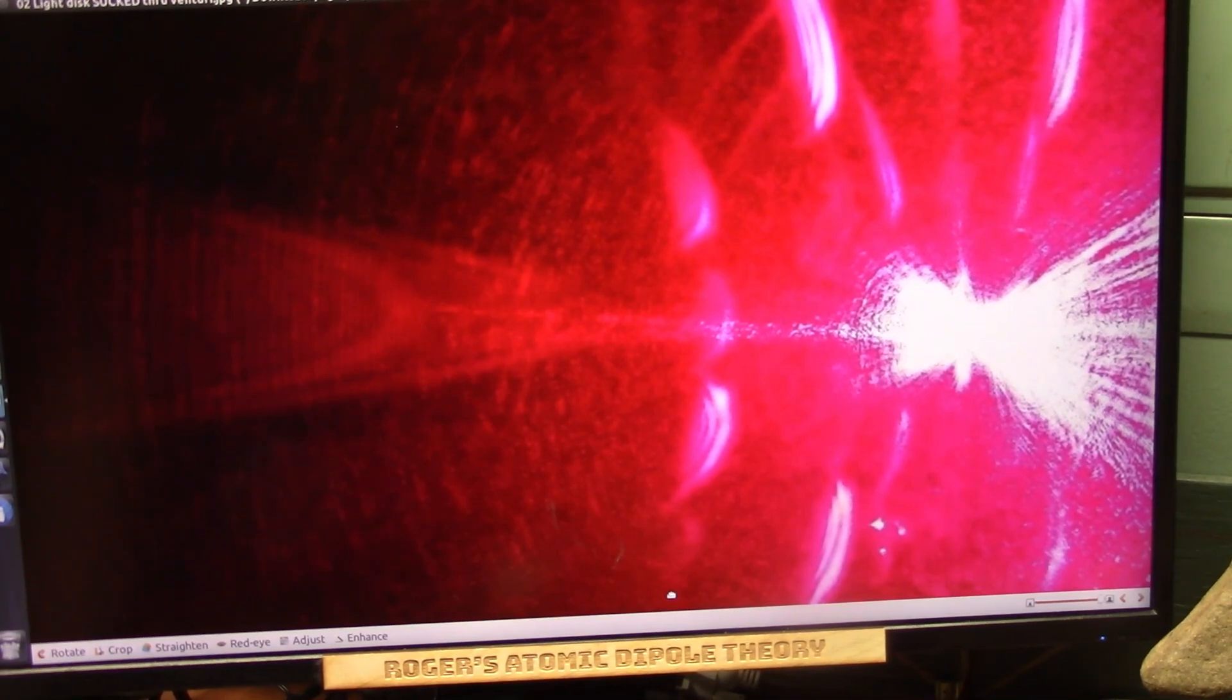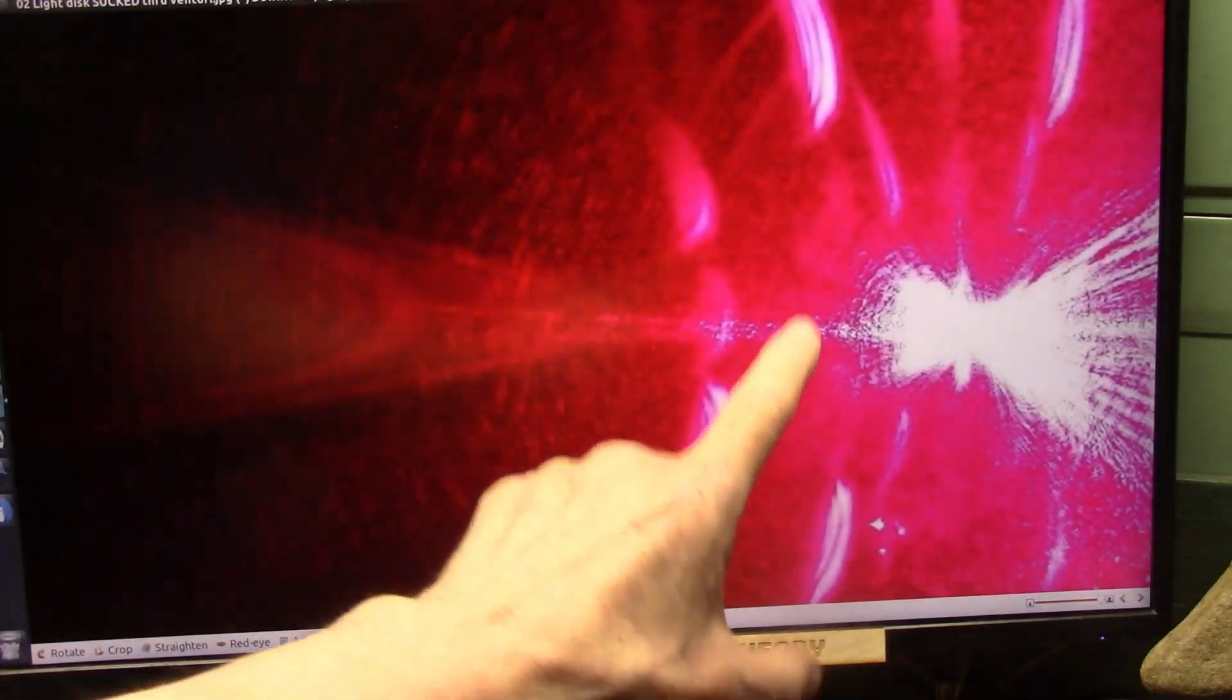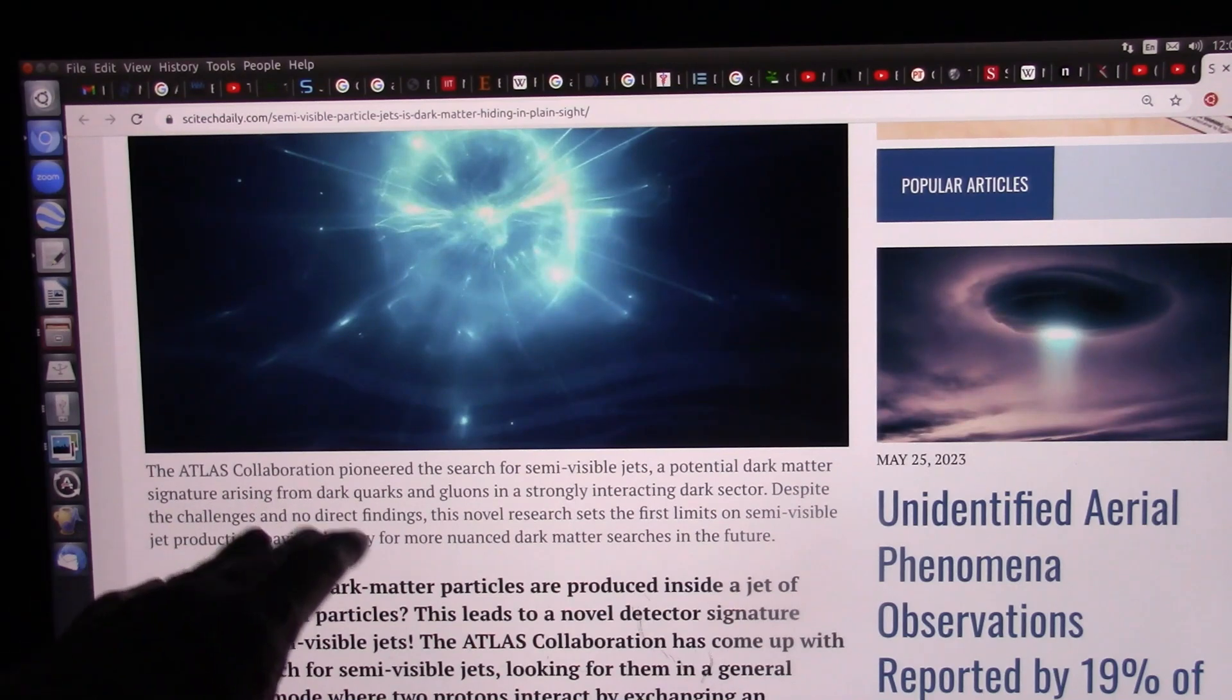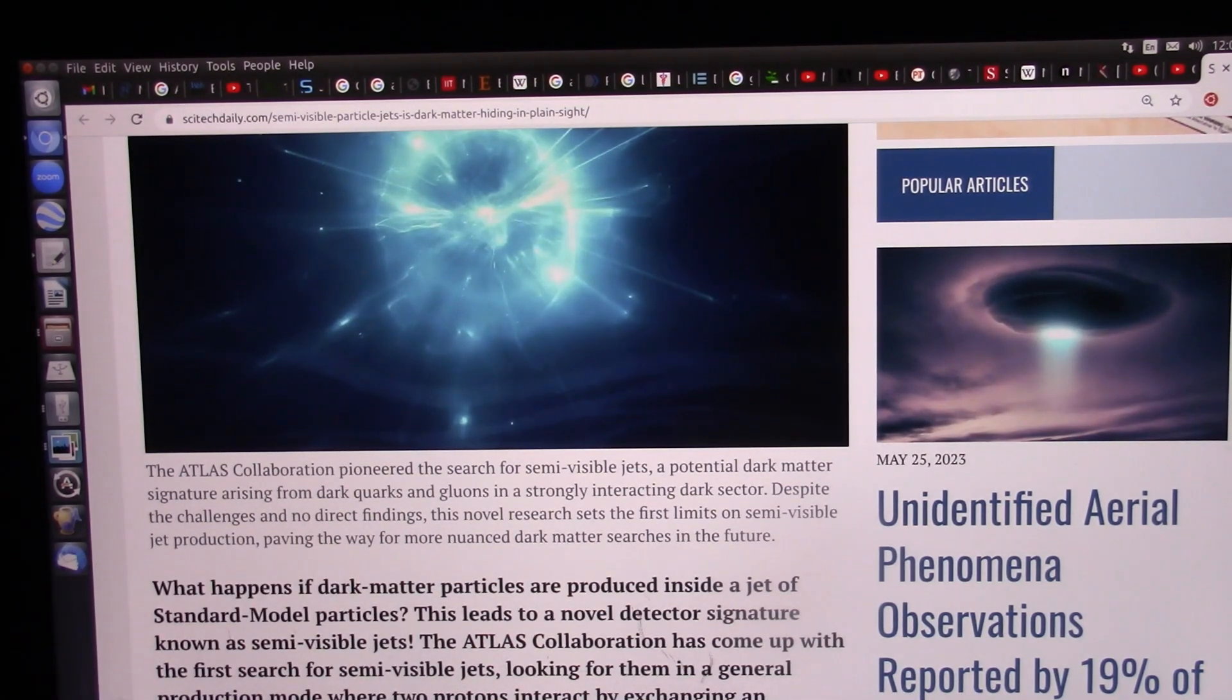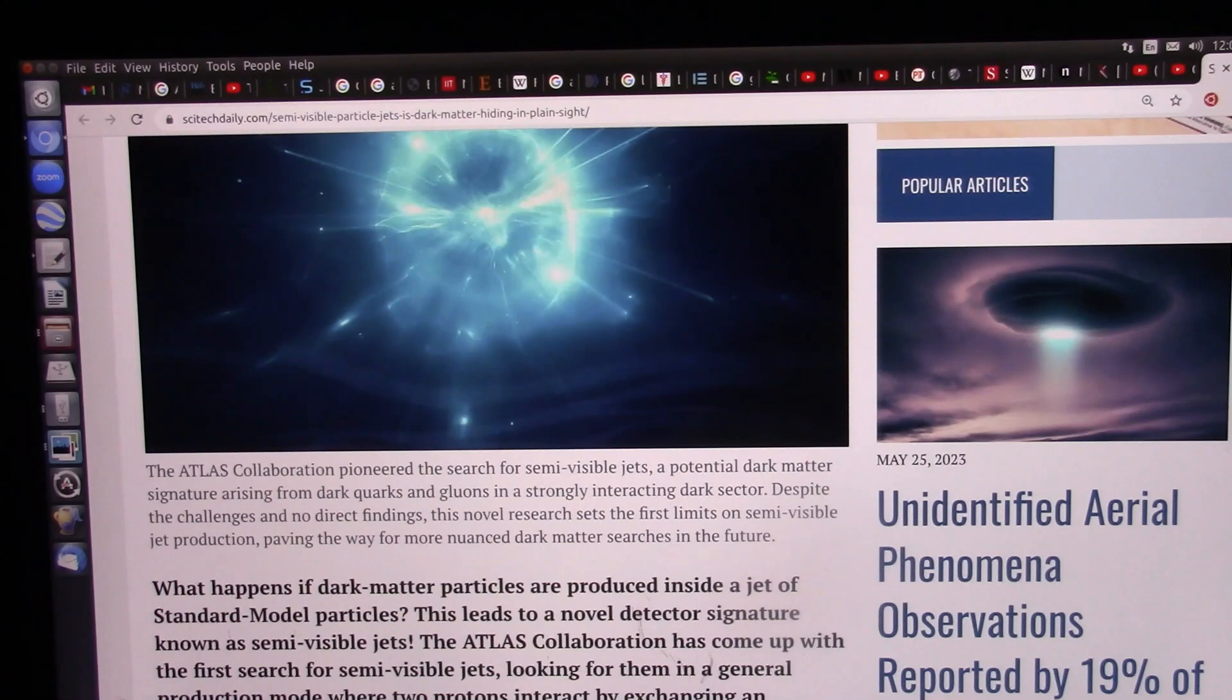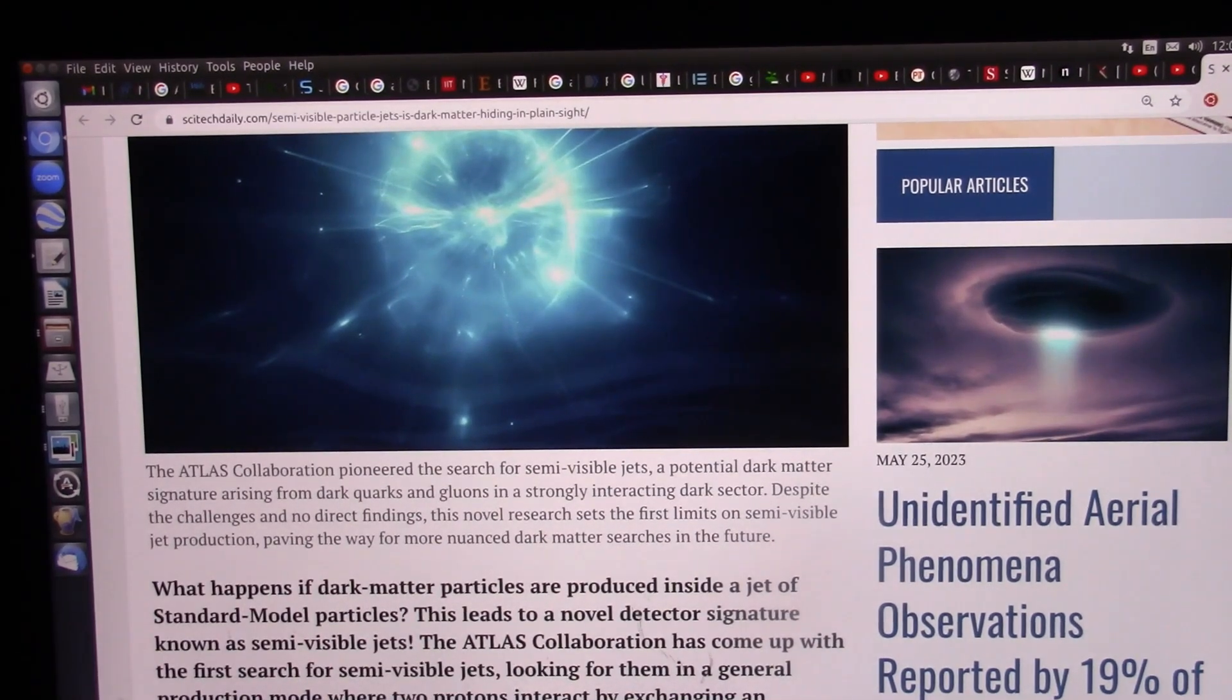Now, everything they claim about this is happening. And now we will see the dark particles, but you can only see them because of this jet stream. All right, listen to this now. This ATLAS collaboration pioneered the search for semi-visible jets, a potential dark matter signature arising from dark quarks and gluons in a strongly interacting dark sector. I will show you this actually happening. Despite the challenges and no direct findings, they couldn't find them, we found them, this novel research sets the first limits on semi-visible jet production, paving the way for more nuanced dark matter searches in the future.